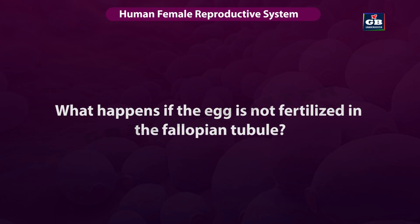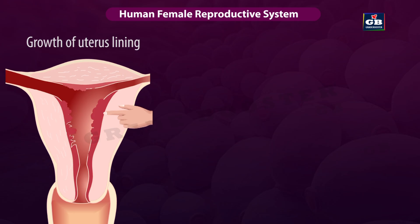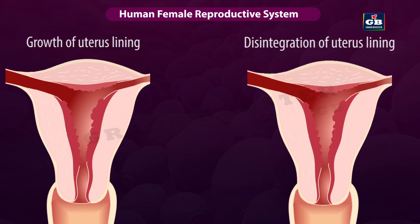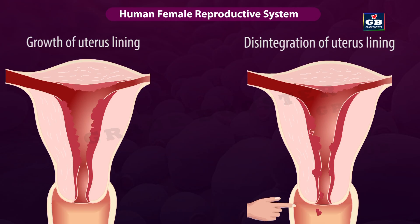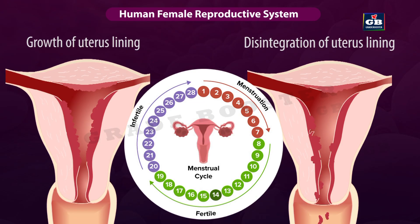What happens if the egg is not fertilized in the fallopian tubule? Every month, the walls of the uterus get lined by blood vessels and tissues in anticipation of an embryo. If the egg is not fertilized and no embryo is formed, the unfertilized egg lives for one day. After that, the egg gets dissolved and the tissues on the lining of the uterus along with blood slowly break down and expel out through the vagina. The loss of blood and mucus from the vagina lasts for 2 to 8 days. This process is called menstruation. Since this process is periodical and happens every 28 days, it is called the menstrual cycle or periods.